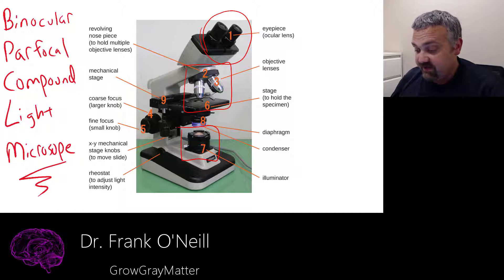Now, getting a 1000x to 2500x is a great thing, but beams of electrons, for example, have a much shorter wavelength so they can get a much greater resolution and much better magnification than a light microscope. So binocular parfocal compound light microscope.